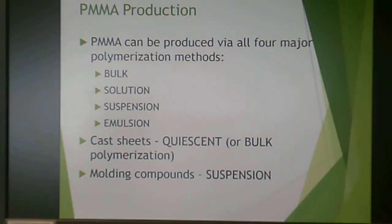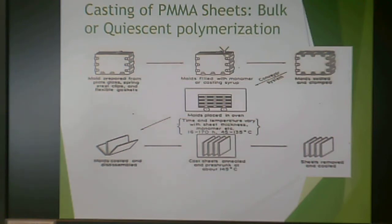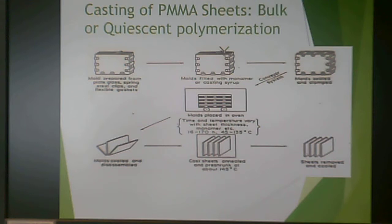Polymethylmethacrylate can be produced by all four major polymerization types: bulk, solution, suspension, and emulsion. It can also be made in cast sheets by bulk polymerization, or as molding compounds made by suspension. When making a cast PMMA sheet, you have a mold filled with a monomer solution — or casting syrup — which is added to the prepared mold. The mold is then clamped and placed in an oven for polymerization to occur, then disassembled and cooled to yield cast sheets. These cast sheets are often annealed and pre-shrunk at about 145°C.